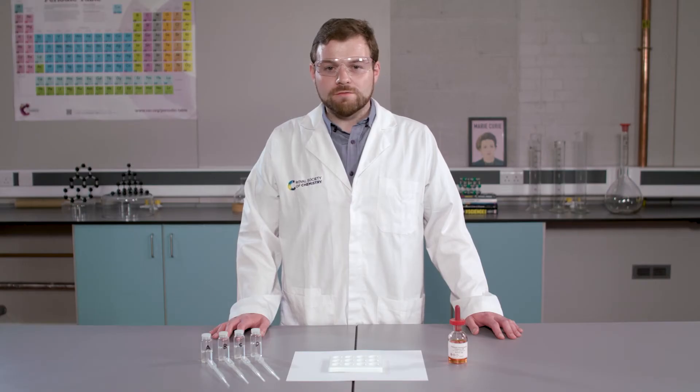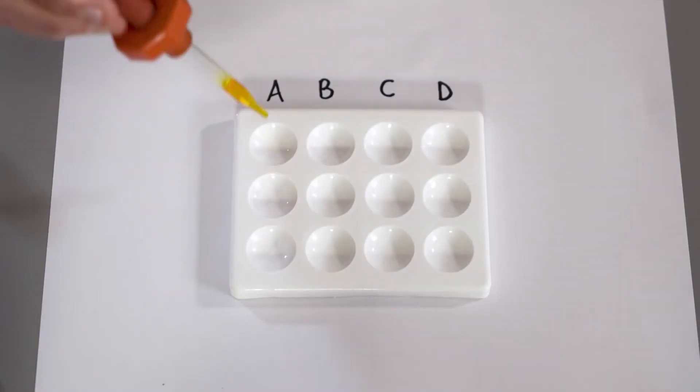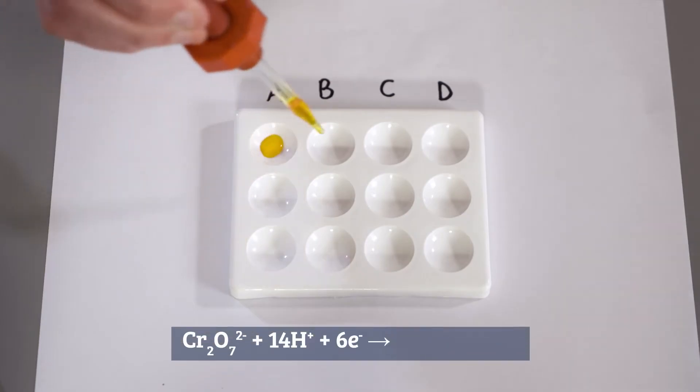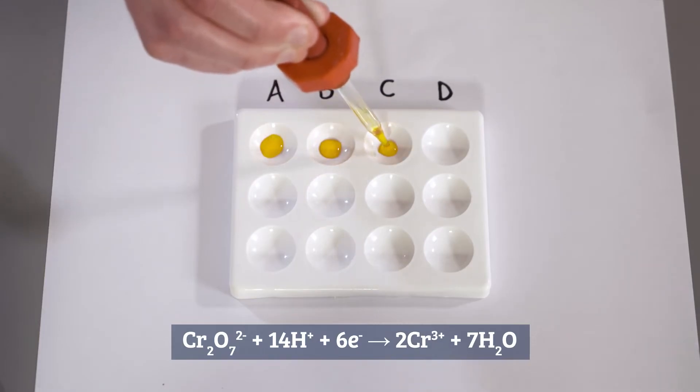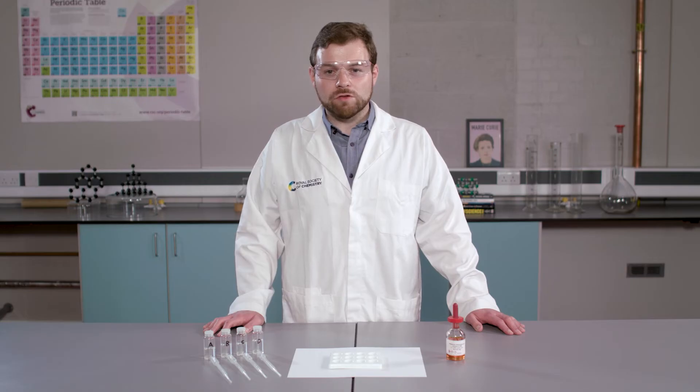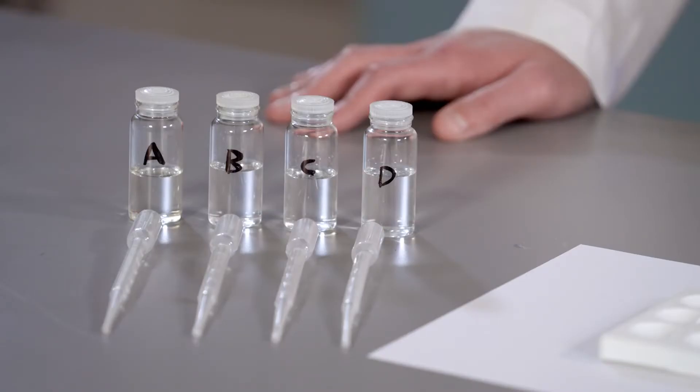For this test, I am going to add a few drops of acidified potassium dichromate to 4 wells in a spotting tile. Potassium dichromate is an oxidising agent. Here we are expected to see a colour change from orange to green, as the chromium 6 ions are reduced to chromium 3 ions. This was in fact the basis for old-fashioned breathalysers. A positive result here indicates the presence of either a primary alcohol, secondary alcohol or aldehyde.